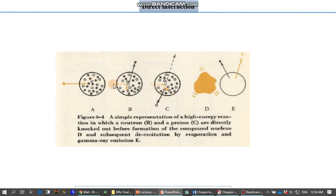This particle interacts directly with an individual proton. When this individual proton is hit by a high energy neutron, it is kicked out. This is kicked out and in the next step, the neutron also leaves the system or is also kicked out.